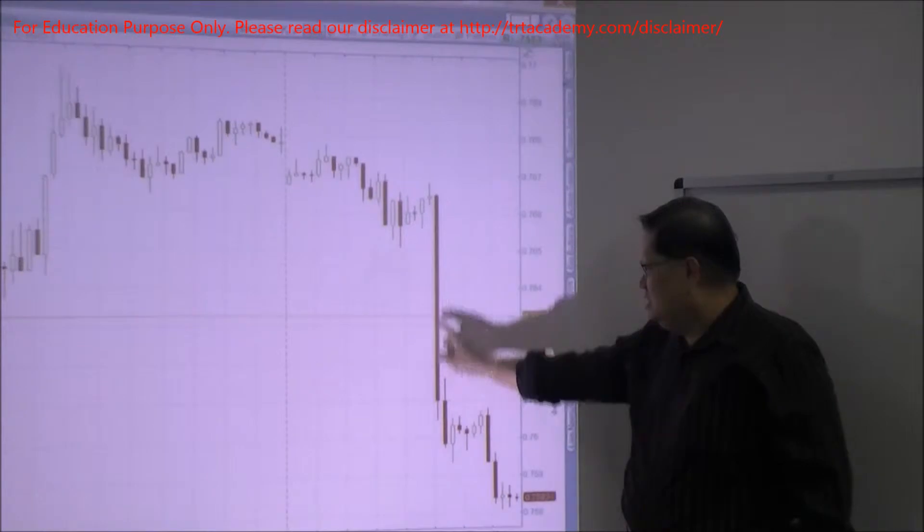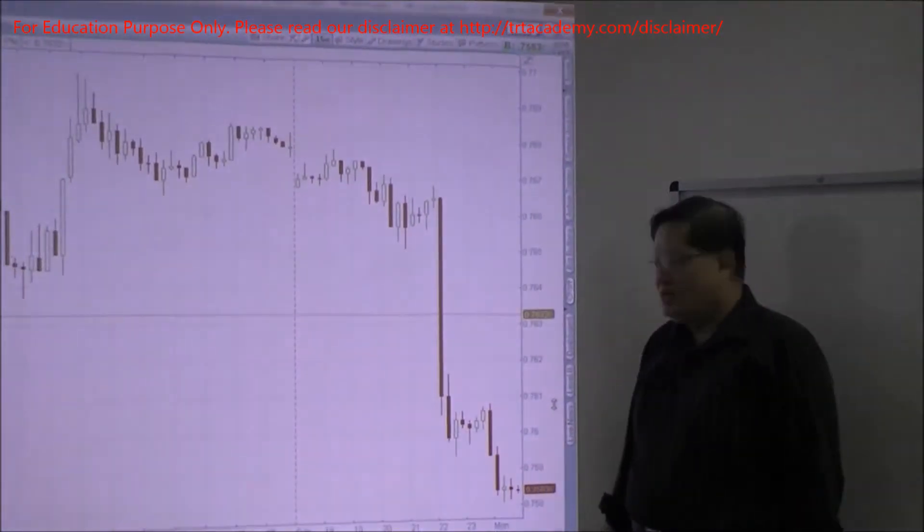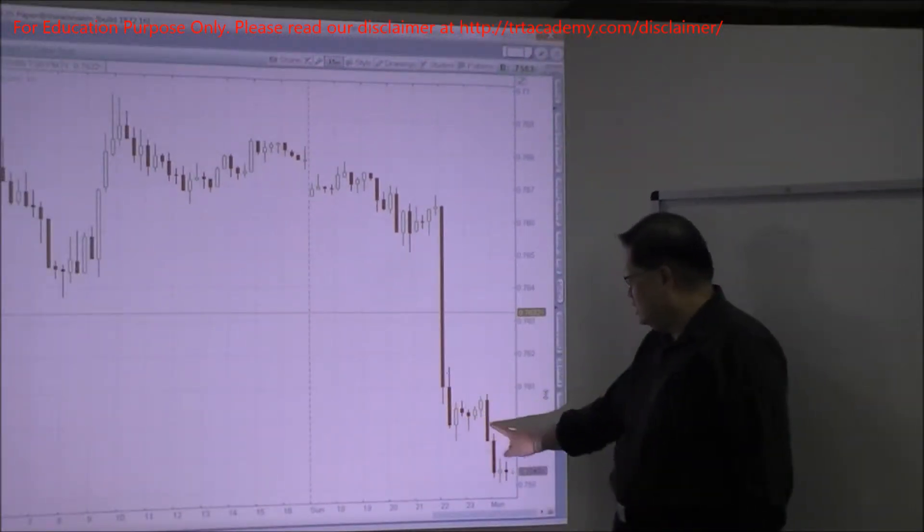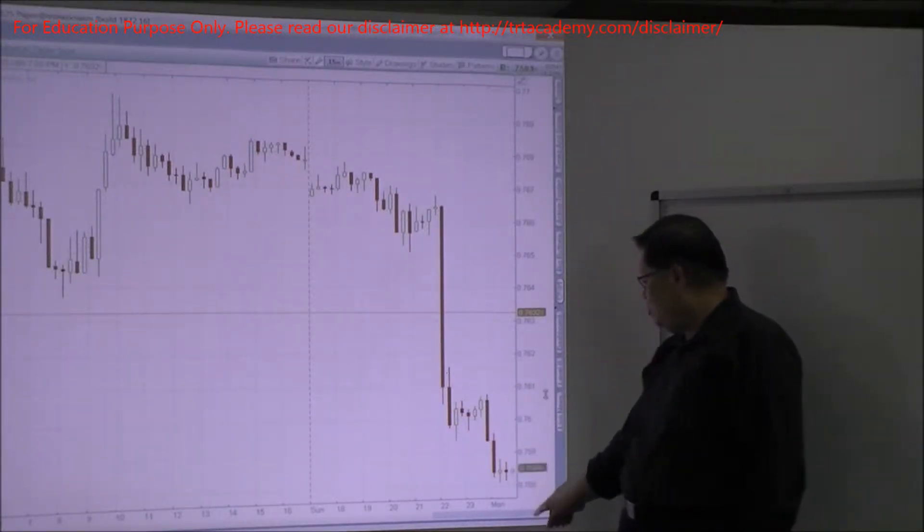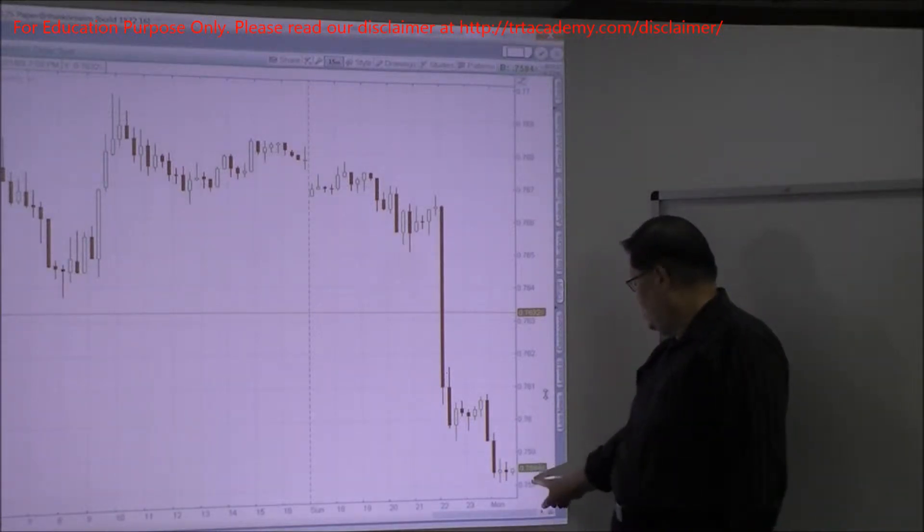and shorted below the candle, you're still making profits over this part. You're still making money over this part here. Now currently, the Aussie dollar is 0.7585.